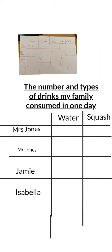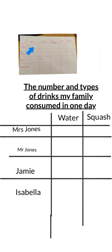Now you need to look at your tally chart and count up how many tallies you've got so that you can put the numbers in your table. The difference between a tally chart and a table is that the tally chart has tallies, but a table has the number. So I need to go to my tally chart and count how many glasses of water Mrs. Jones drank — I can see five and another one, so that's six. In my table, I would write six.